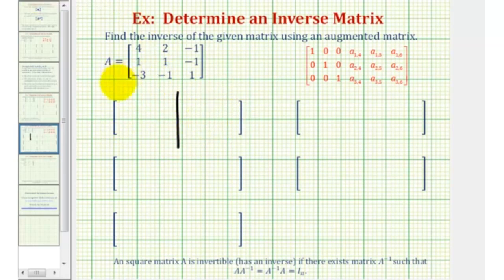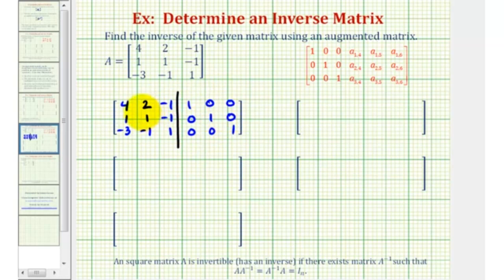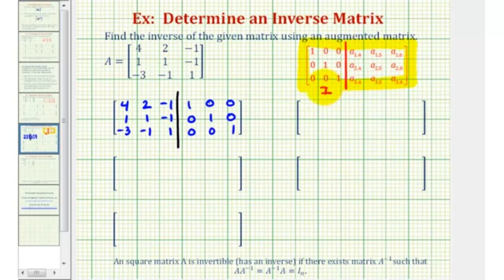So let's go ahead and set this up. We have matrix A on the left and a 3 by 3 identity matrix on the right. Now we're going to perform row operations to transform the left side, or matrix A, into a 3 by 3 identity matrix, as we see here in red. And once we have a 3 by 3 identity matrix on the left, the right side will be the inverse of matrix A, or A-inverse.